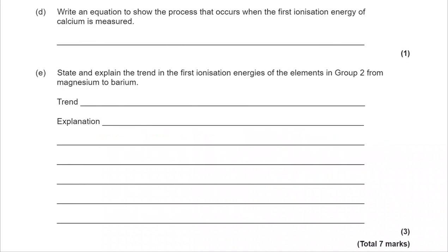Moving on to part D, write an equation to show the process that occurs when the first ionization energy of calcium is measured. So first ionization is the enthalpy change when one mole of gaseous atoms goes on to form one mole of gaseous ions, losing one mole of electrons. So I know I'm going from Ca to Ca plus. I know that in doing so, I'm losing one electron, but I must include the state symbols as well. And we get to the final answer.